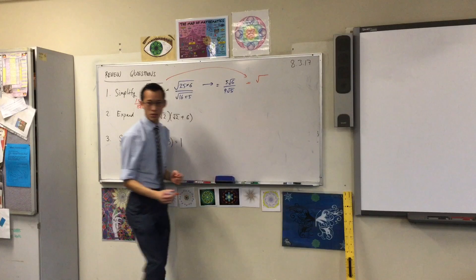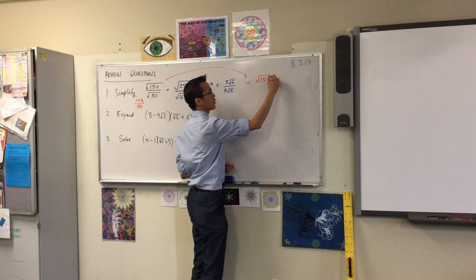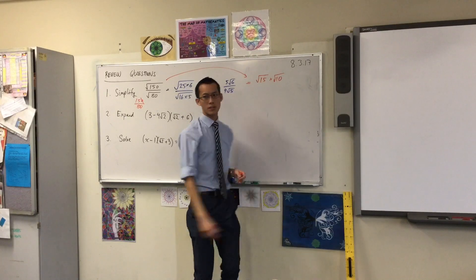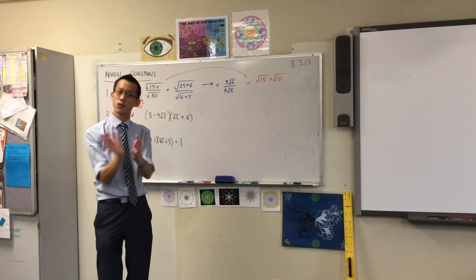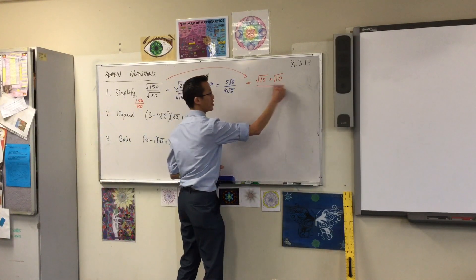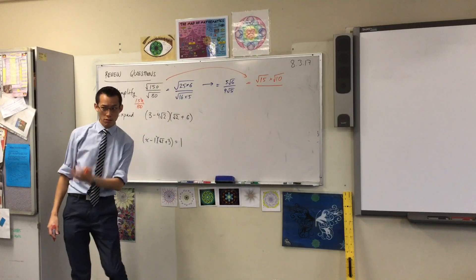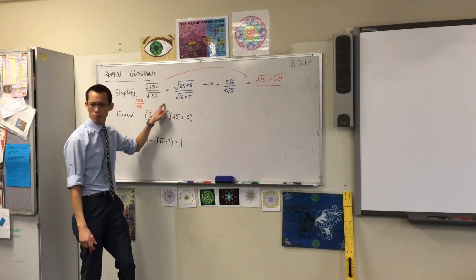Now here's the thing. Even though this is surds, you can do much the same thing if you remember how you split surds apart. Watch this. Is it not true that the square root of 150 is the square root of 15 times the square root of 10? We did this under simplifying surds by multiplying them together. I've just done it in reverse. In the same way, on the denominator, do you agree that I could write that as root 8 times root 10?